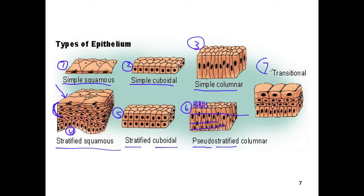There is one more type called transitional. Transitional means these cells can transition in shape and size depending on whether the body part is relaxed or distended — like a balloon that changes shape when inflated or deflated. Transitional cells are found in parts of the body where the organ can alter its shape and size, like the urinary bladder and the ureters.